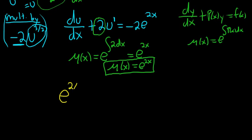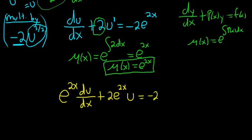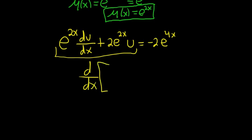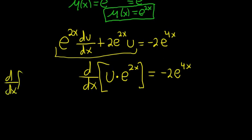We multiply everything by e^(2x). The first term becomes e^(2x) · du/dx. The second term becomes plus 2·e^(2x)·u. On the right we get negative 2, and e^(2x) times e^(2x) is e^(4x) — you add the exponents. The left-hand side always becomes d/dx of the unknown function times the integrating factor, which in this case is d/dx of u·e^(2x).